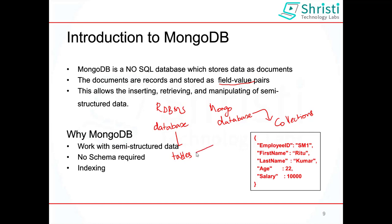Collections are synonymous to tables in RDBMS. In one table you have multiple rows, and each row is called a record. In MongoDB, in one collection you have documents, and each document is called a record. Each document has a field-value pair. For example, a document with fields employee_id, first_name, last_name, age, and salary — with values SM1, Ritu, Kumar, 22, and 10,000. In RDBMS, these would be columns.